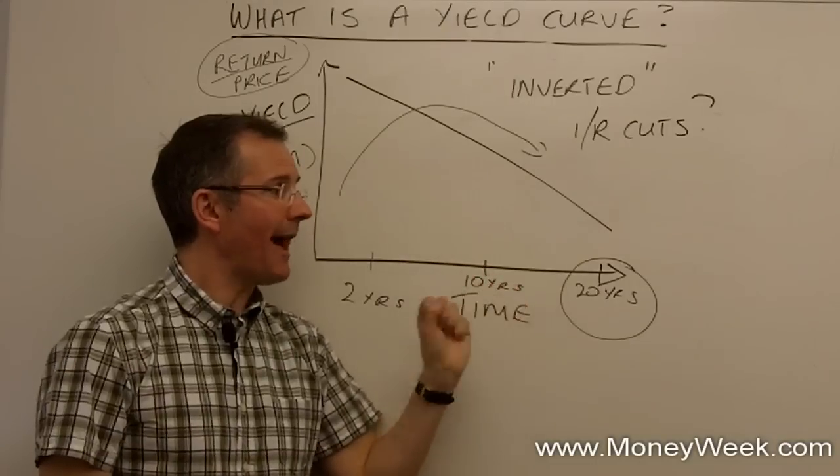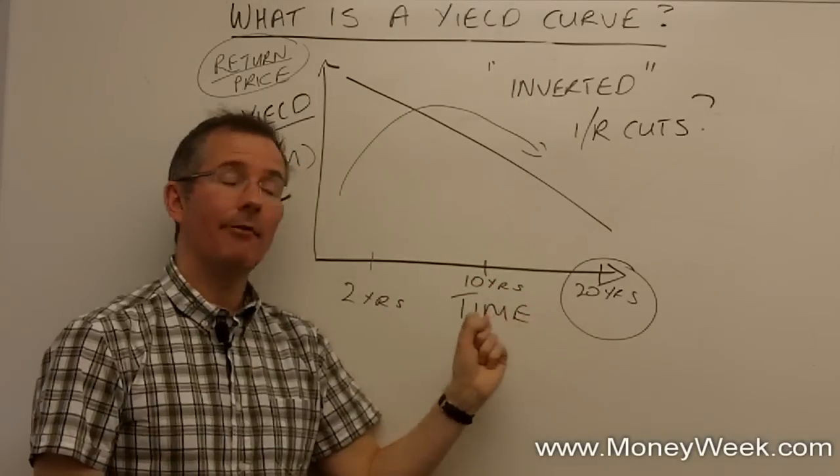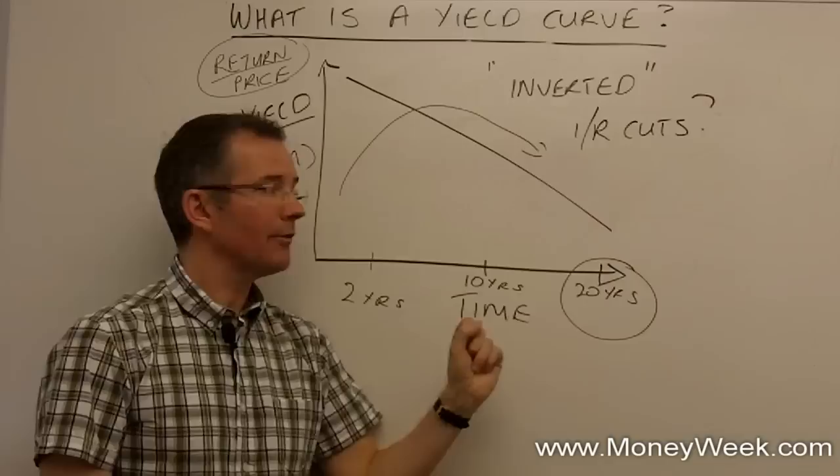So if people start piling in to long-term government debt, price rises, yield gets squashed. And they're doing it because they're thinking, well, in an environment of central banks cutting interest rates, I want the high fixed, relatively safe yield on a government bond.